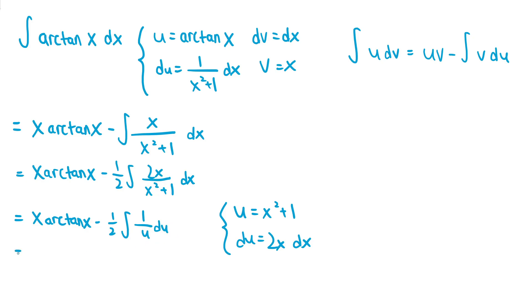The integral of 1 over u is just the natural logarithm of u. So this just becomes minus 1 half times ln of the absolute value of u plus some constant c.